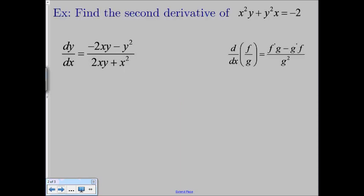Our first example problem actually looks a lot like the last example problem of the previous implicit differentiation video. In the last video, we found the first derivative of x squared y plus y squared x equaling negative 2. So now we're going to find the second derivative. Because we've already learned about higher order derivatives, we know that to find the second derivative, all we have to do is take the derivative of the first derivative. To save some time, we're not going to go through how to find the first derivative of this function again. I've typed the derivative up for you there on your screen on the left-hand side.